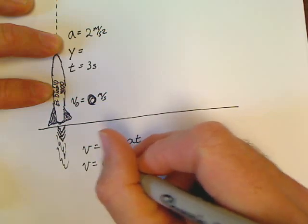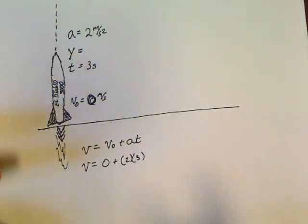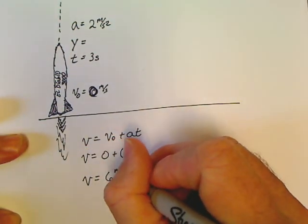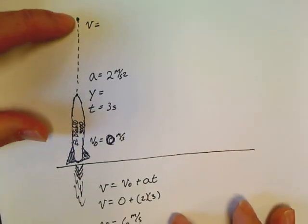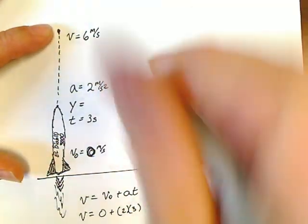Velocity is equal to VO plus AT. So V is equal to zero plus two times three. Hey, this is going to be a big shot number. Two times three. Velocity is six meters per second. So this rocket is not much of a rocket. It starts with a pretty modest six meter per second velocity.